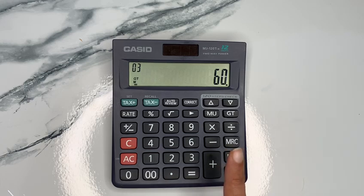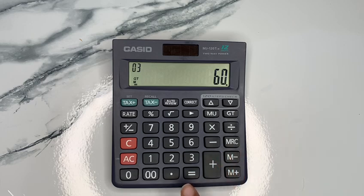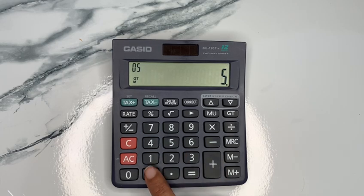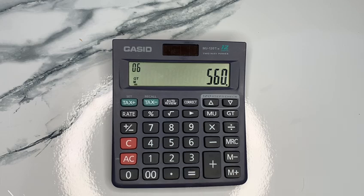Now I will add 60 to 500. I press the addition button and enter 500, then press the equal sign.